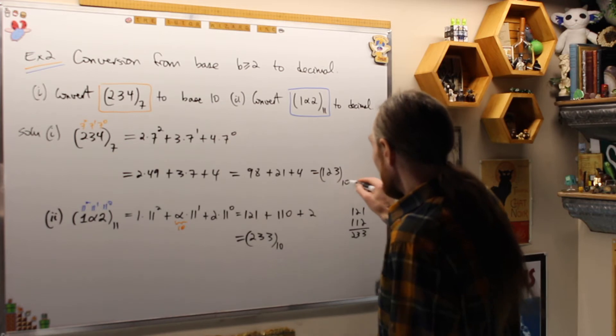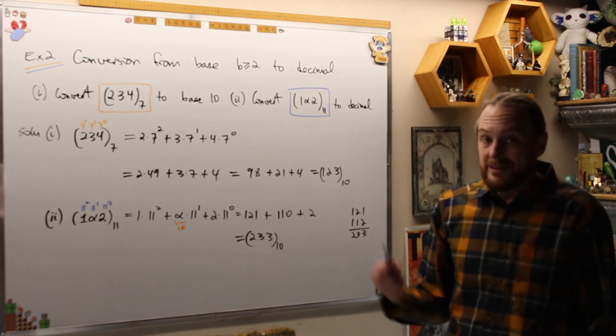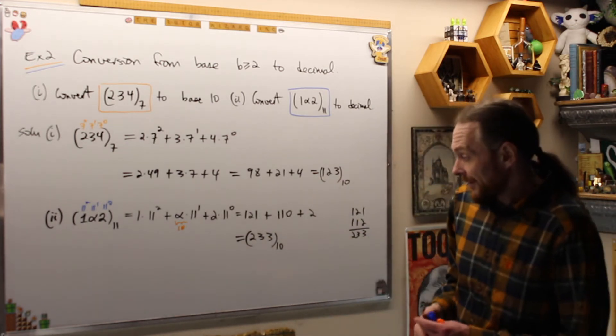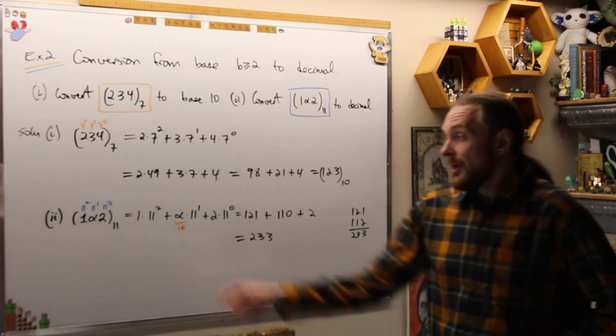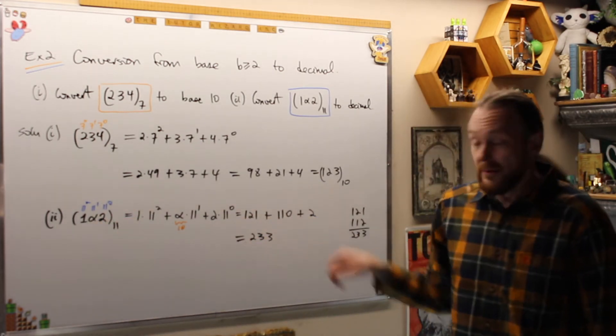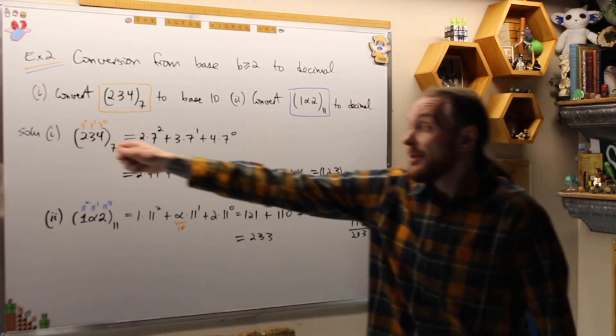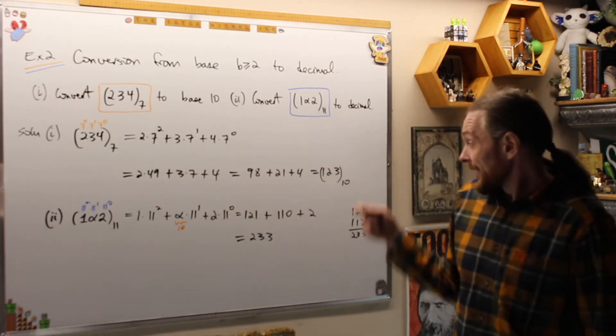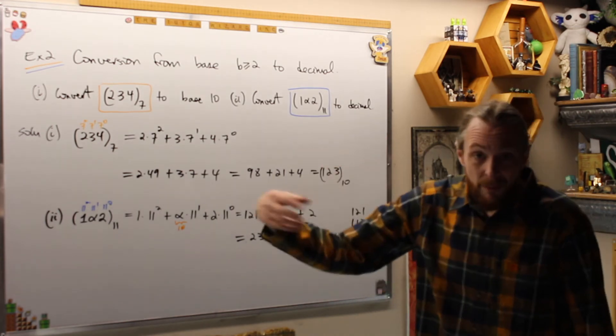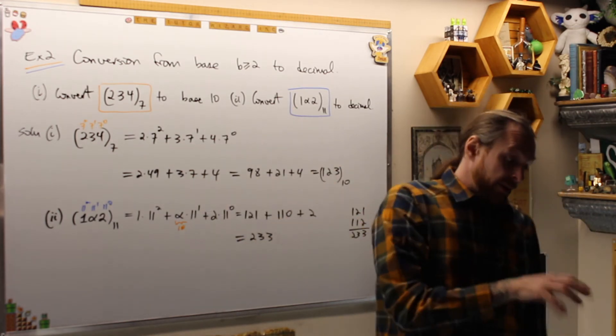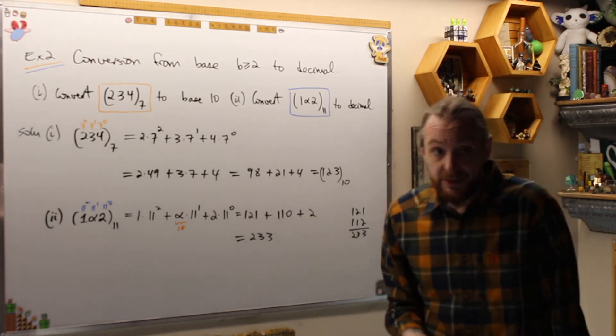I don't usually write in the base 10 because the decimal form is the familiar one. So if I leave it off, I mean in base 10. So 1-alpha-2 is 233 apples in the basket, and 234 base 7 is actually 123 apples in the basket. This is how I convert from a strange base to familiar land base 10 representation or decimal.